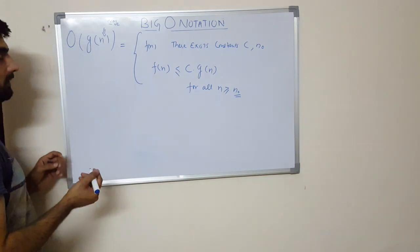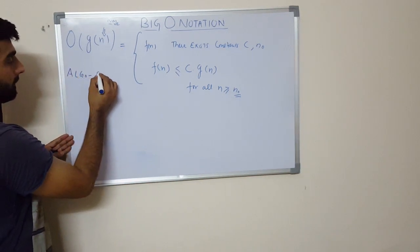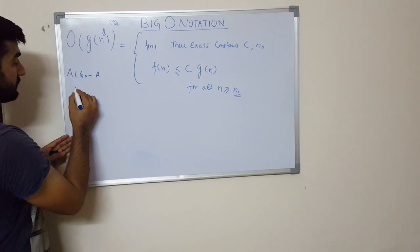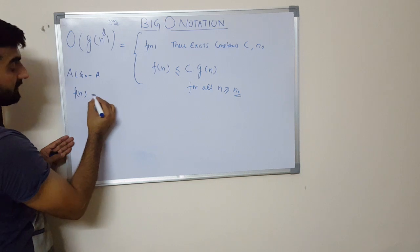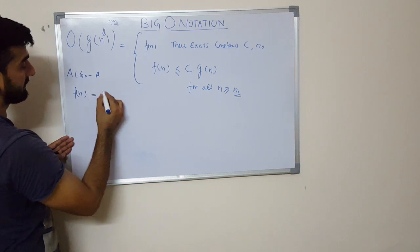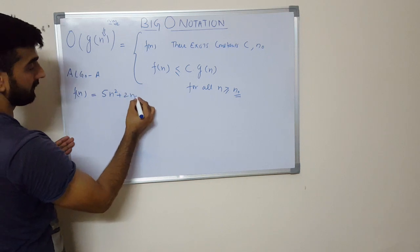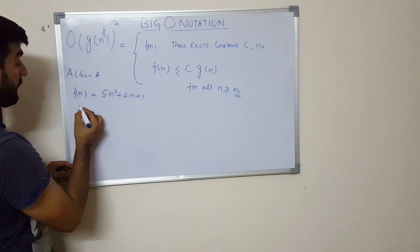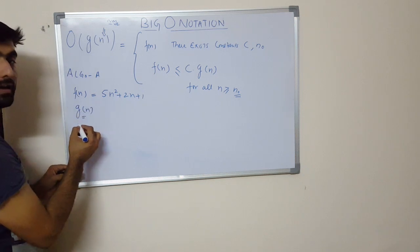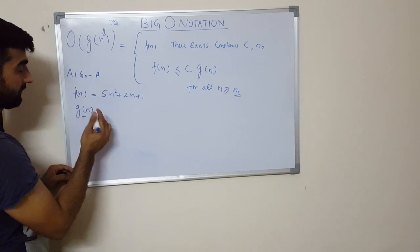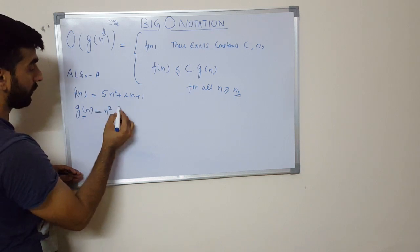So let us take an example. Let us assume that we have an algorithm A whose complexity is denoted by this function f(n), which in some hypothetical case I am taking here is 5n² + 2n + 1. And the g(n), the function rate of growth for this function, is n².